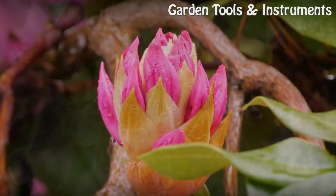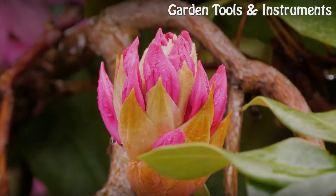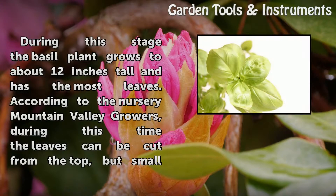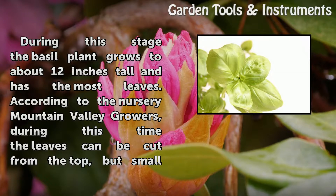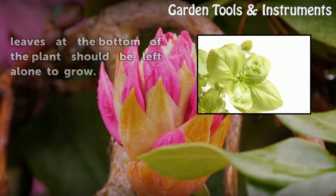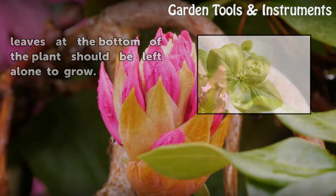Juvenile Stage: During this stage the basil plant grows to about 12 inches tall and has the most leaves. According to the Nursery Mountain Valley Growers, during this time the leaves can be cut from the top, but small leaves at the bottom of the plant should be left alone to grow.